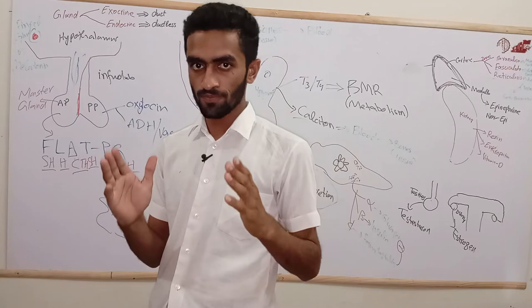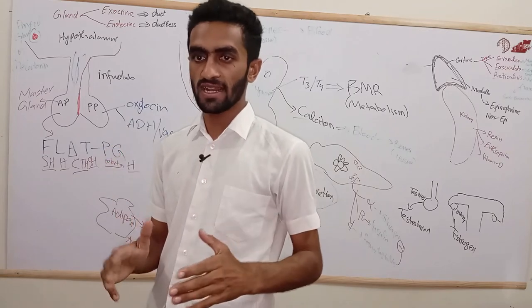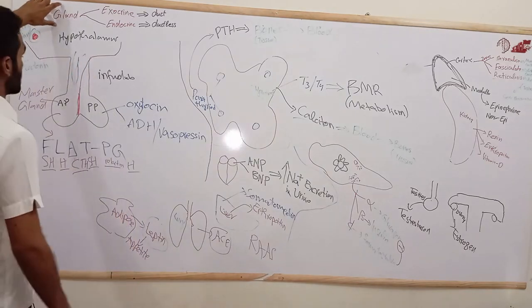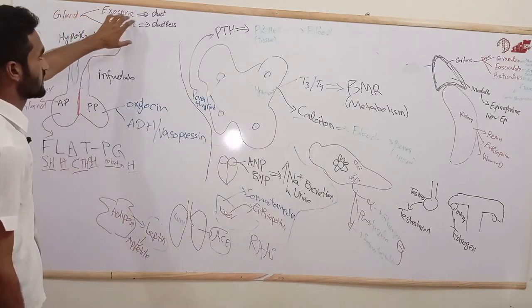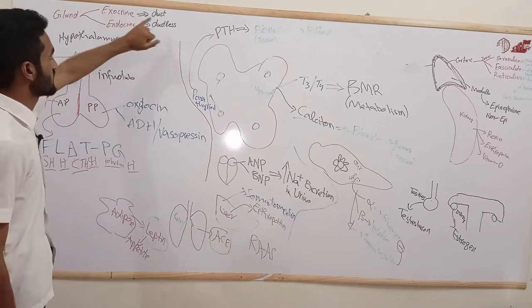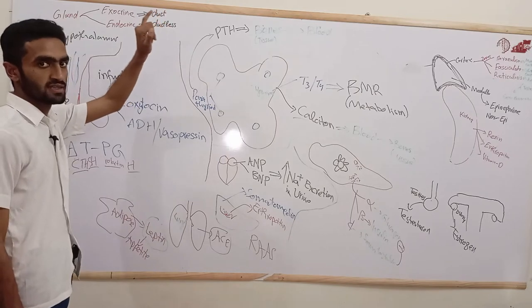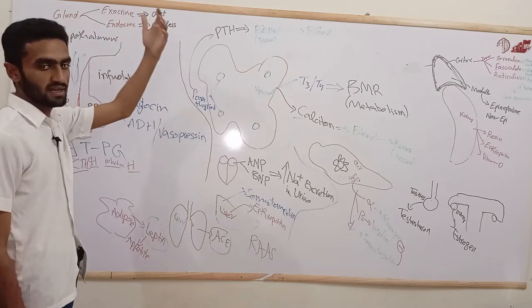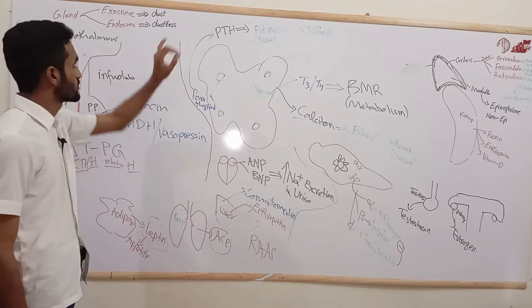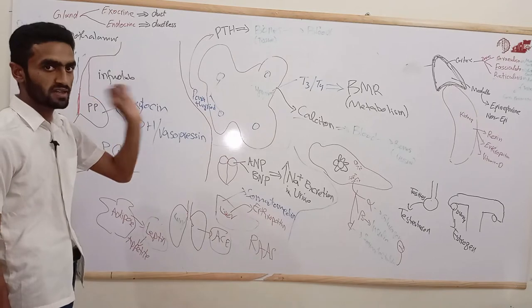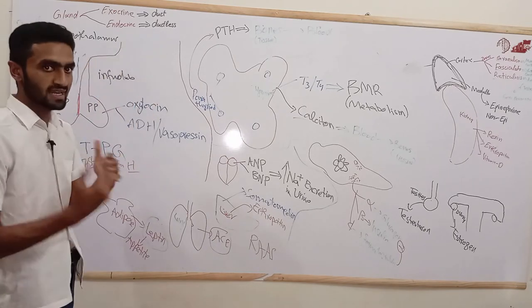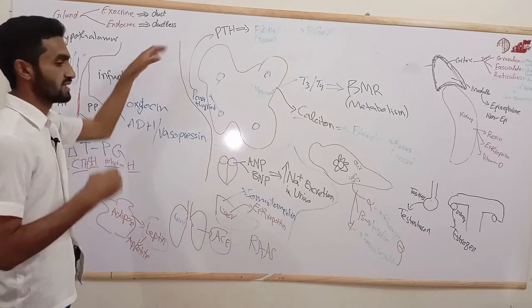Let's revise the major endocrine glands and some tissues. We have two types of glands: exocrine and endocrine. Endocrine are ductless, while exocrine have ducts — for example, salivary glands and the pancreas, which is 98% exocrine in nature, secreting pancreatic juice through a duct. Endocrine examples include gastrin and other hormones we are going to discuss.